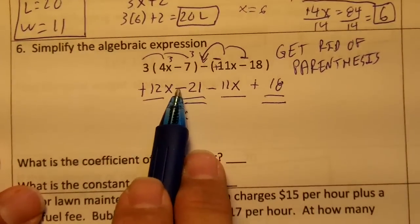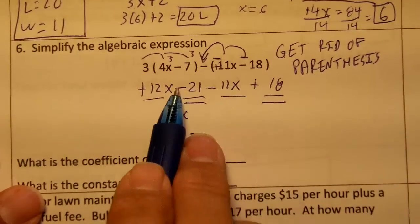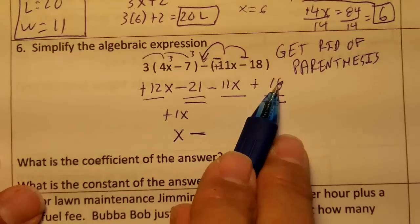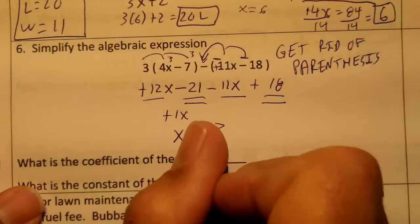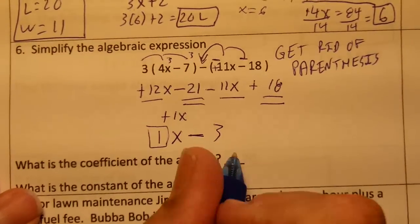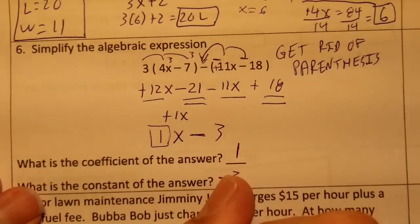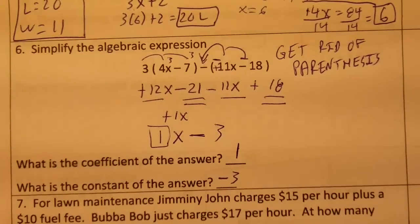The 21's larger. You drop the minus. This is negative, that's positive. You're not going to add, you're going to subtract. 18 away from 21 is 3. So our coefficient is 1 and our constant is negative 3. The coefficient would be 1, and the constant wouldn't just be 3—it would be negative 3. Thank you.